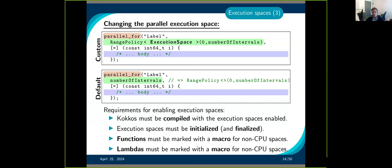There are a few requirements. Kokkos must be compiled with your chosen execution space enabled — if you compiled with CUDA and Serial, you cannot use OpenMP at runtime. All execution spaces need to be initialized and finalized, so you must call Kokkos::initialize and Kokkos::finalize. These work similarly to an OpenMP init and finalize. Once you finalize, you cannot re-initialize Kokkos.